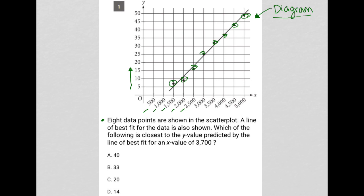Which of the following is closest to the y-value predicted by the line of best fit for an x-value of 3,700? See, we see this line of best fit here. So here is 3,500, here is 4,000. I'm going to estimate that this is about 3,750, right in between.